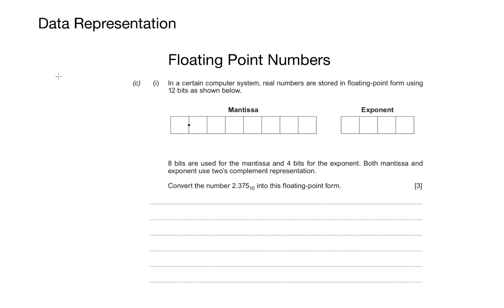Now the question talks about this thing called a mantissa and an exponent. The mantissa of a number is the actual value, and the exponent is how many places we move the decimal point. Now I've got a four-step method that will help us tackle all of these questions.